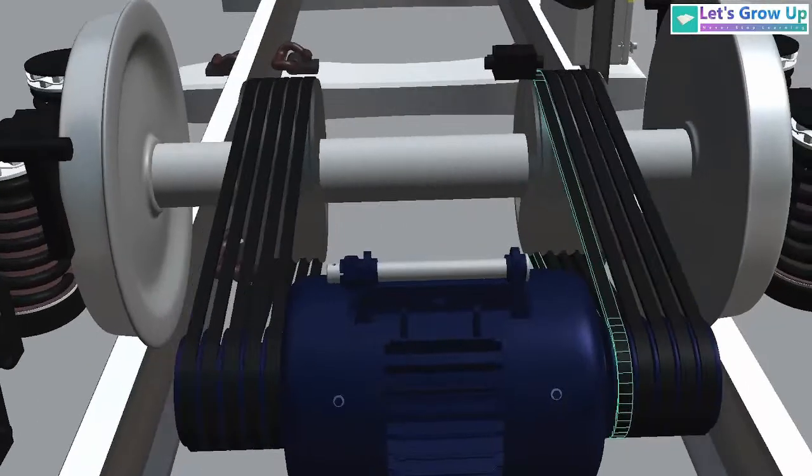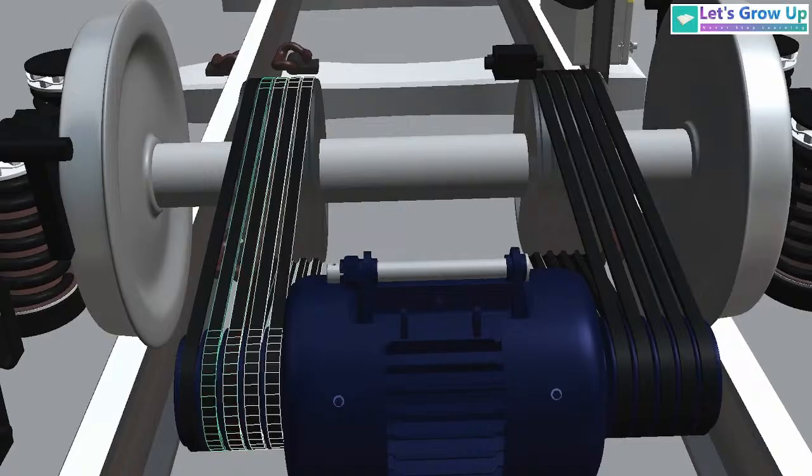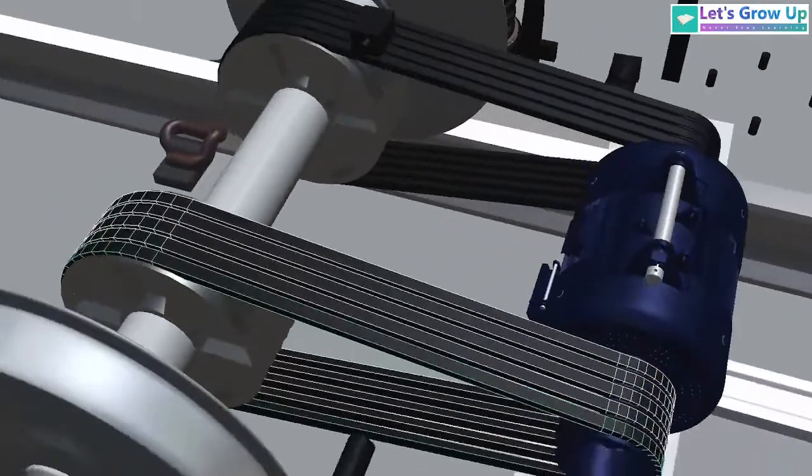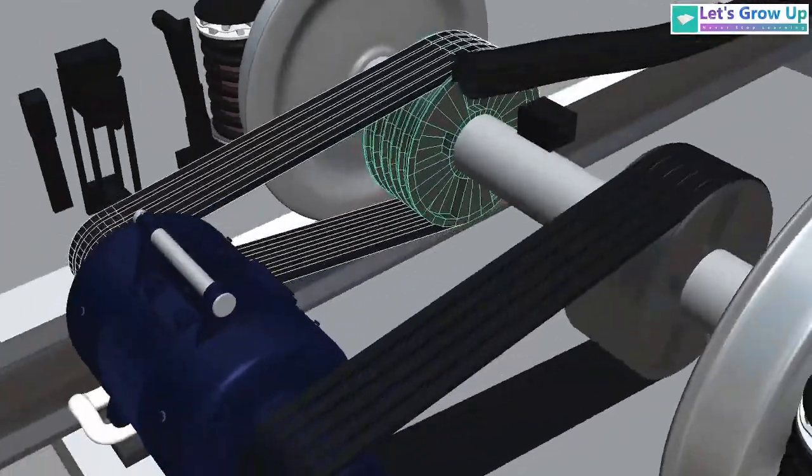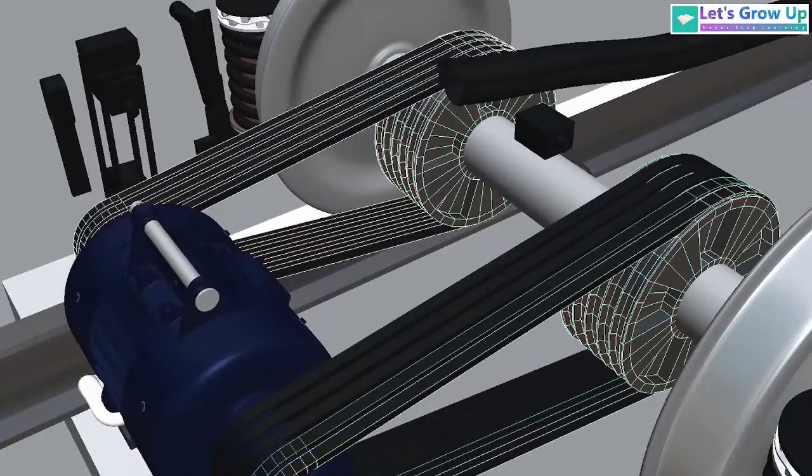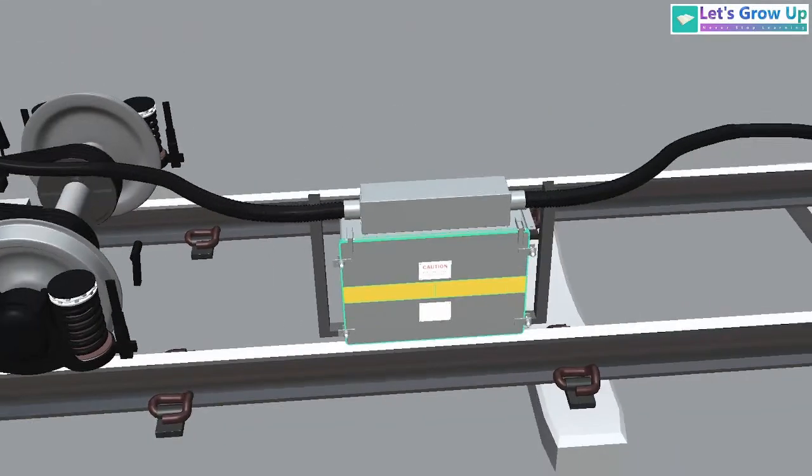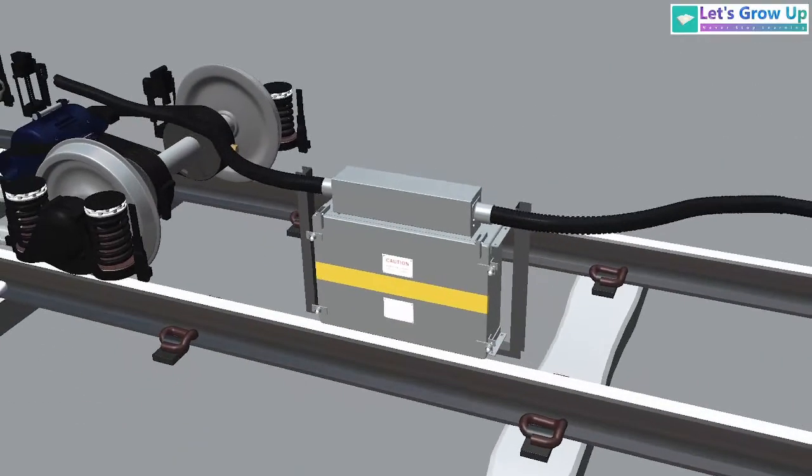Unlike the simpler DC output of the smaller units, these produce 97 volts, three-phase AC electricity, which is then processed by a rectifier-regulator unit, RRU.